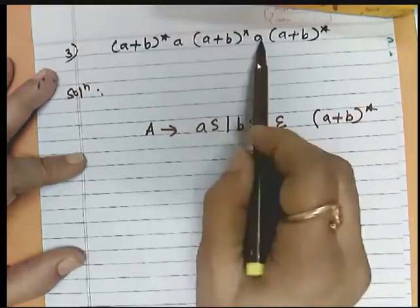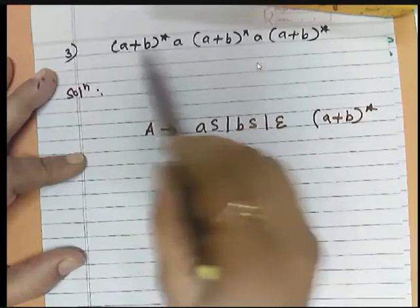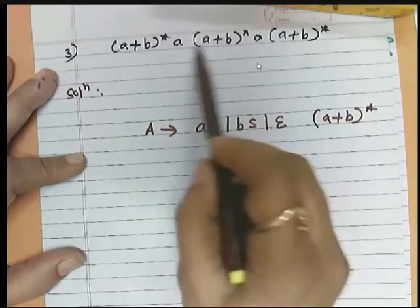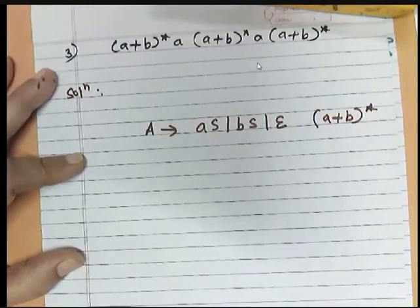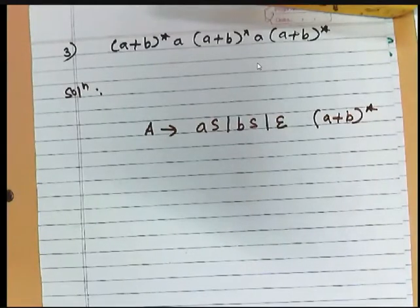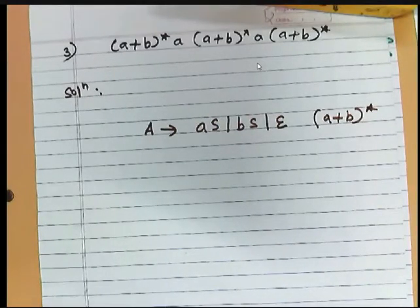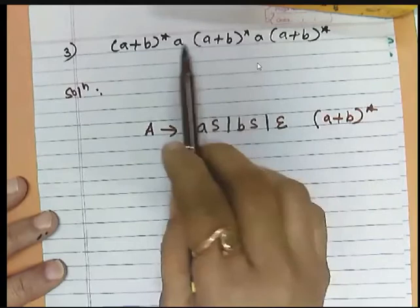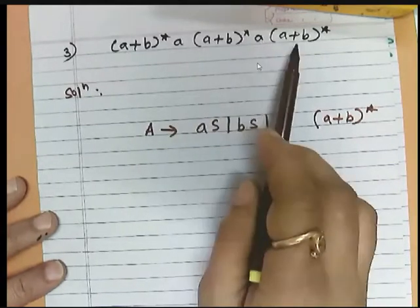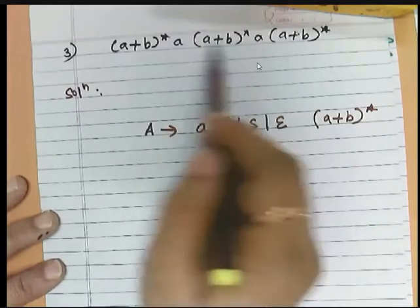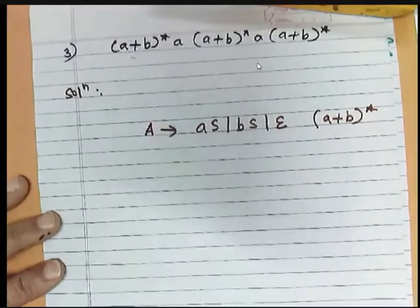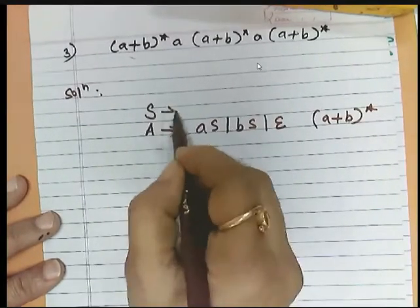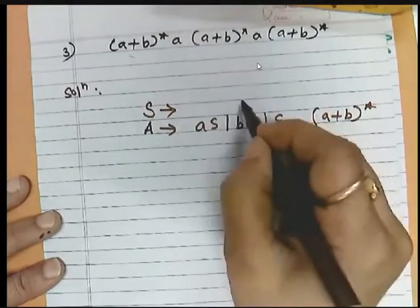Now what we want — we want this part to be compulsory, and these are the optional parts. When it is a compulsory part, the language will have a minimum of two a's. Their location is not fixed — they are not required to be concatenated, but the requirement is that these two a's must be there. So if I write only this, only (a+b)* will be generated. I need to write one production where this 'a' must be there.